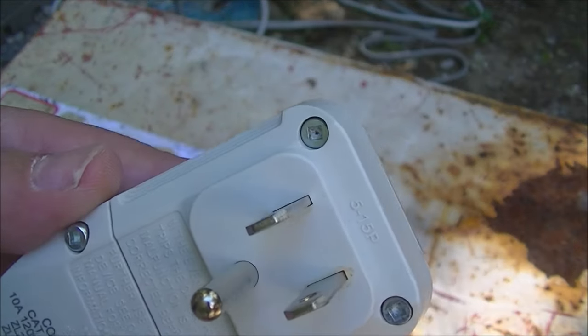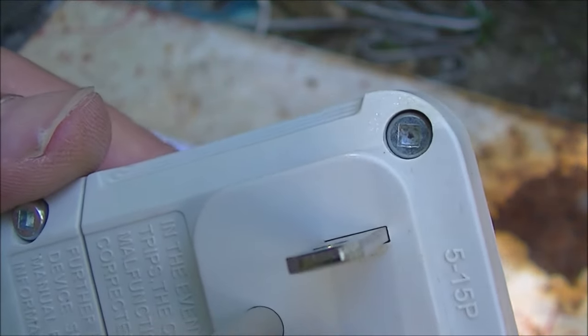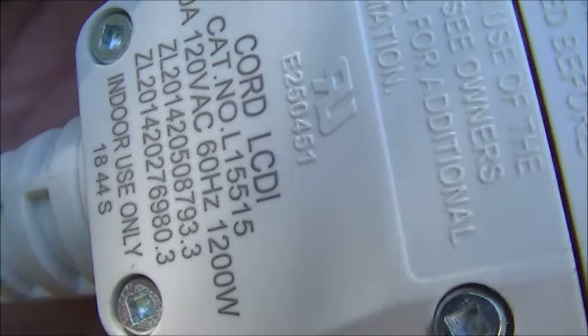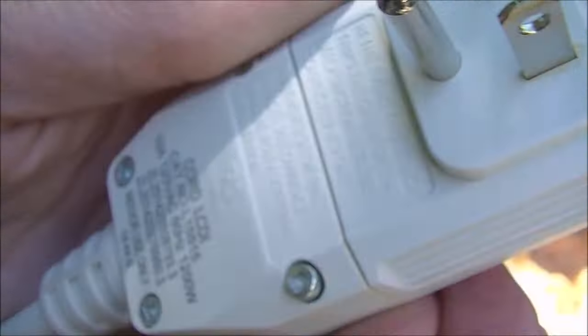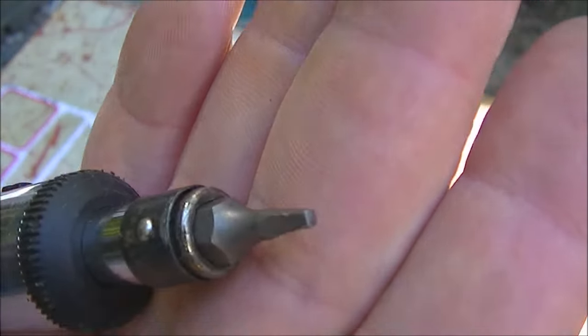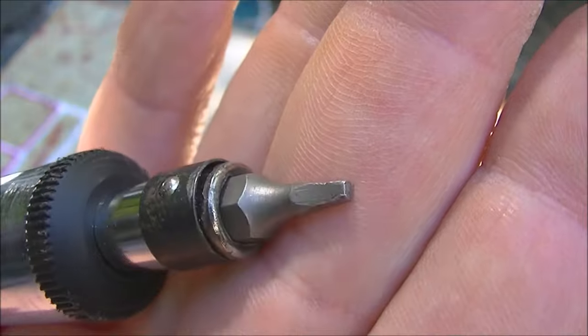Now you've got these square security screws, so you're going to need one of these square security bits. It's just a square bit.